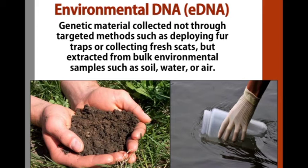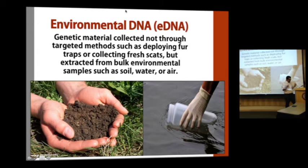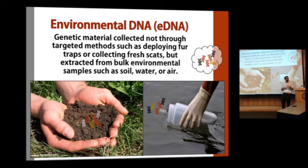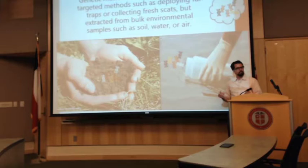What's novel about the environmental DNA approach is that we don't go out and collect specific sources of DNA. We're not setting out fur traps or taking time to collect individual scats. Instead, we're taking a soil sample, a water sample, or setting out a dust trap and collecting air. All of these bulk environmental samples contain a mixture of DNA from many organisms. So if we know the DNA of the particular invasive species or endangered species we're looking for, we can use standard laboratory techniques of DNA extraction and PCR — things that have been around for decades — to look for clues that our organism was there.